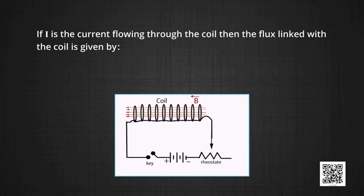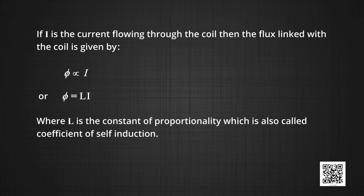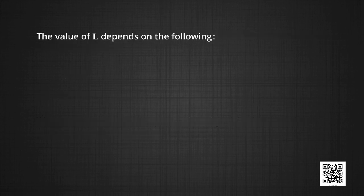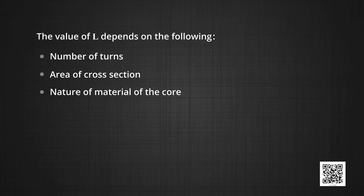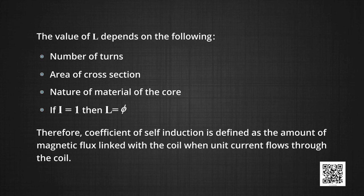If I is the current flowing through the coil, then the flux linked with the coil is given by phi, which will be proportional to I. Removing the proportionality sign, we can say phi is equal to L into I, where L is the constant of proportionality and is called the coefficient of self-induction. The value of L depends on number of turns, area of cross-section of the coil, and nature of the material of the core. If I is equal to 1, then L becomes equal to phi. Therefore, we can define coefficient of self-induction as the amount of magnetic flux linked with the coil when unit current flows through the coil.